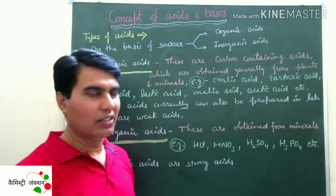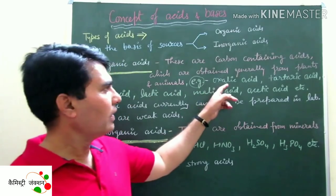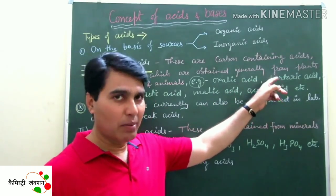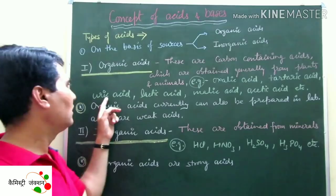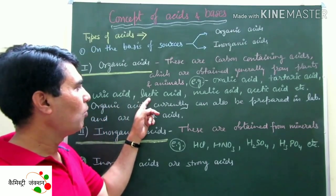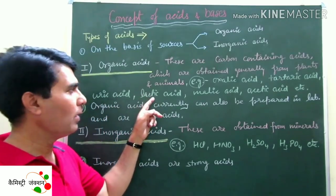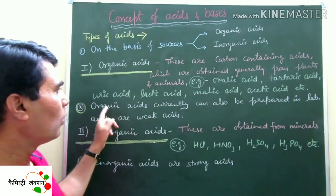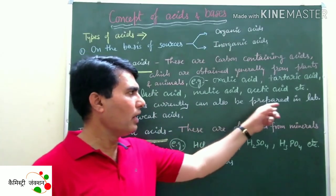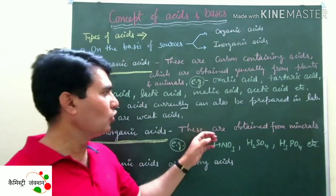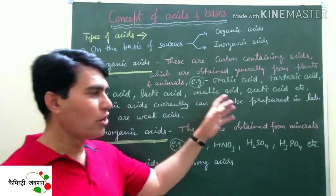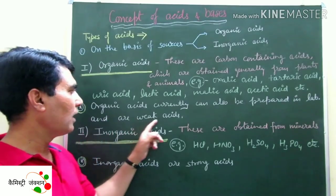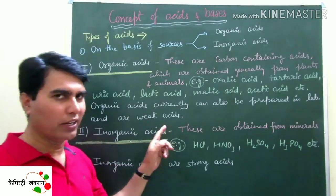Initially, organic acids were isolated from plants and animals, and they still are. These are carbon-containing acids extracted from plants and animals. Oxalic acid is found in tomatoes, tartaric acid in tamarind and amla, uric acid in urine, lactic acid in milk products like milk and curd, and malic acid in apples. Organic acids can also be prepared in the laboratory synthetically. The nature of organic acids is that they are weak acids.